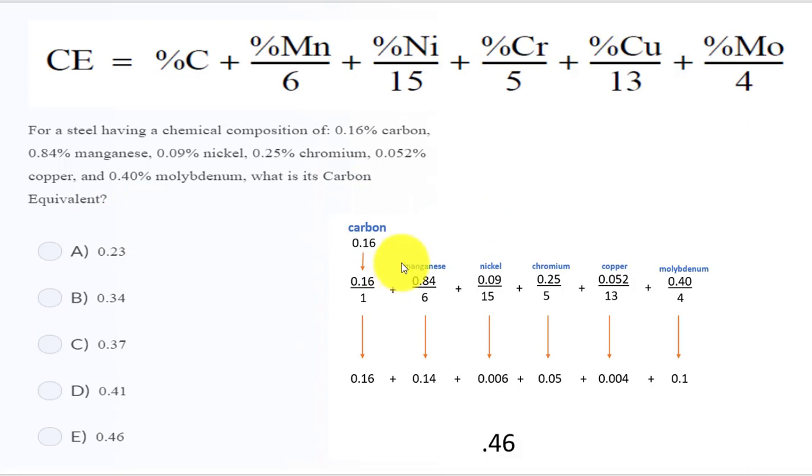The percentage of carbon is 0.16, so I make everything the same: 0.16 over 1, plus manganese 0.84 over 6, plus nickel 0.09 over 15, plus chromium 0.25 over 5, plus copper 0.052 over 13, plus molybdenum 0.40 divided by 4.